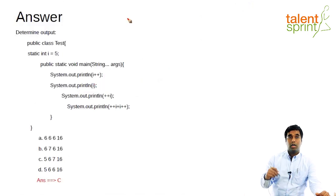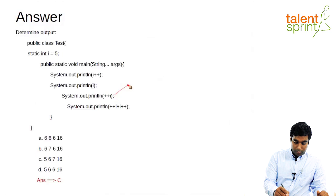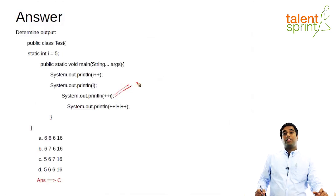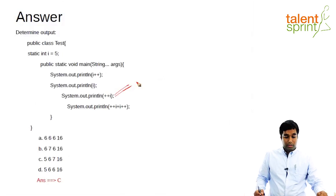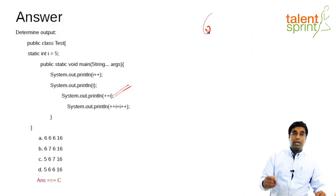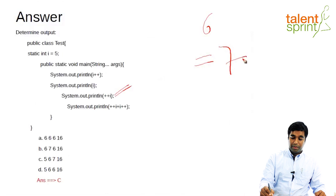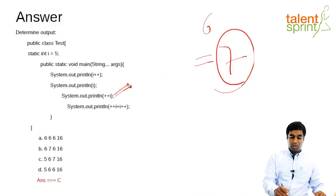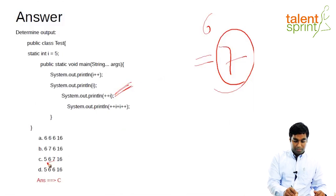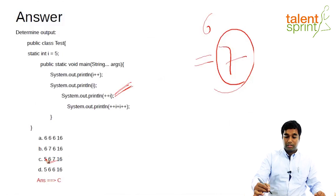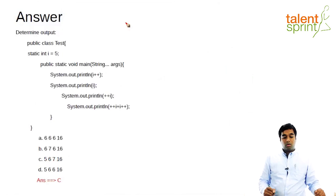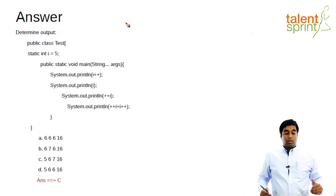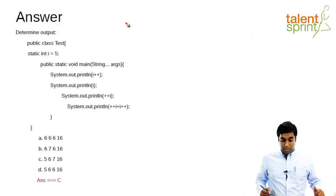Now let's come to the third statement, which is plus plus I — the pre-increment operator. The pre-increment operator increments first and evaluates later. The value of I is 6, so it increments to 7, and then the print statement evaluates I, which has already become 7. So the third line prints 7.